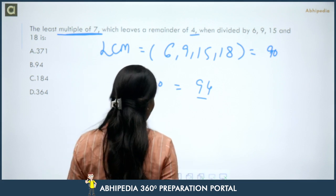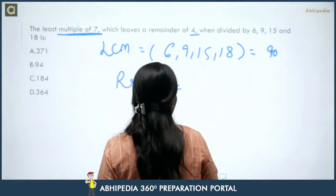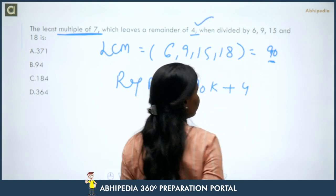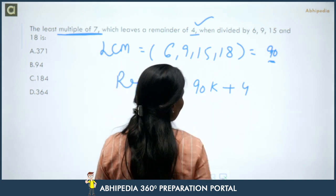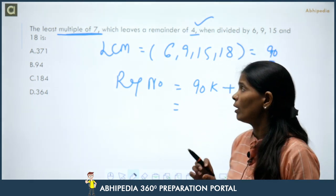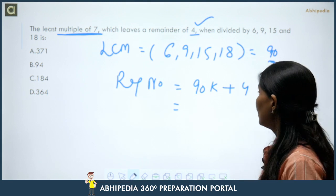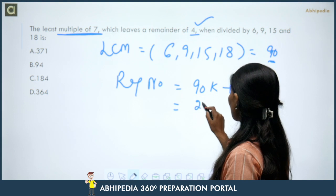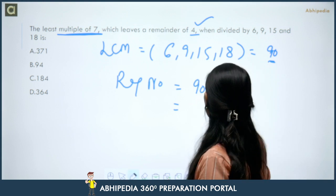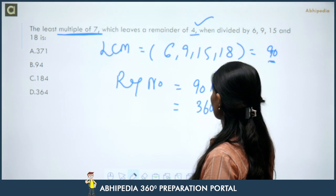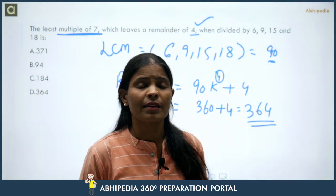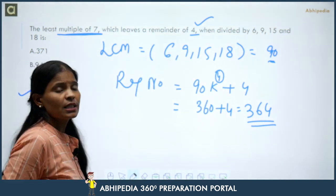We continue checking: for k=2, we get 184 — not divisible by 7. For k=3, we get 274 — also not divisible by 7. For k=4, we get 360 + 4 = 364, which IS divisible by 7. So the answer is 364.